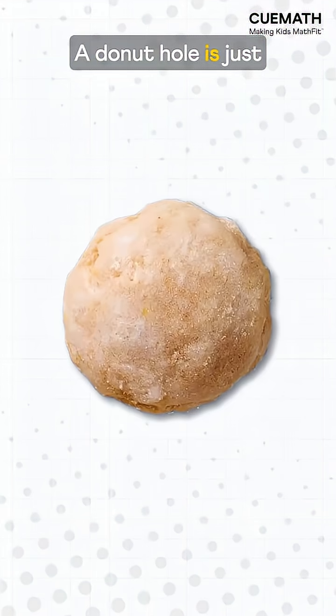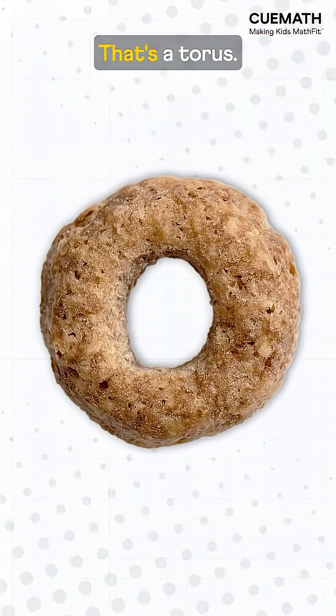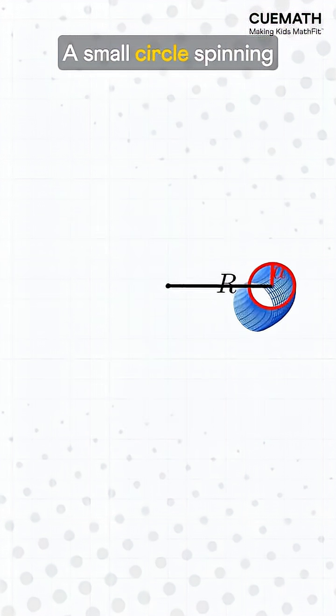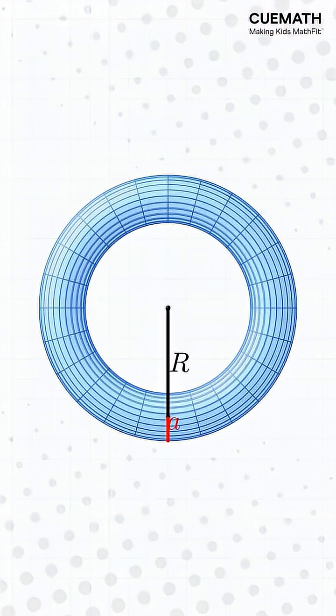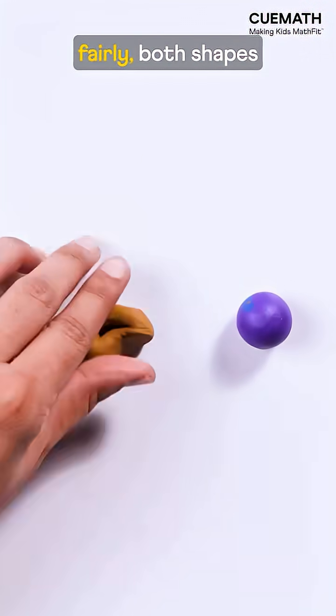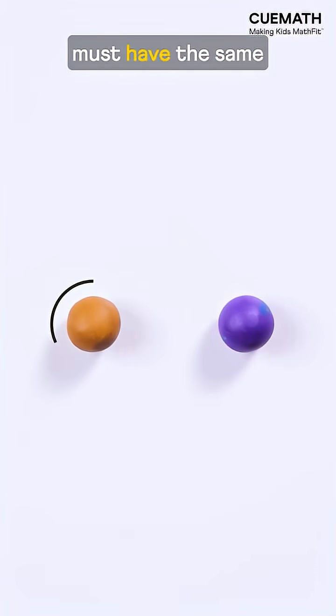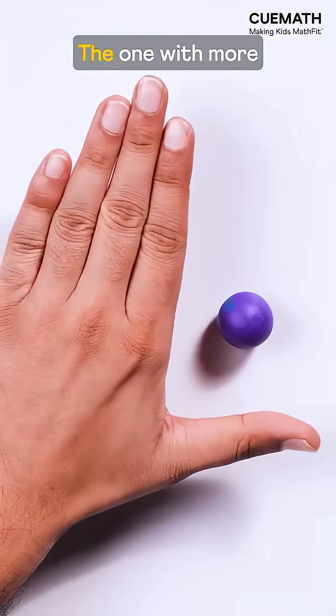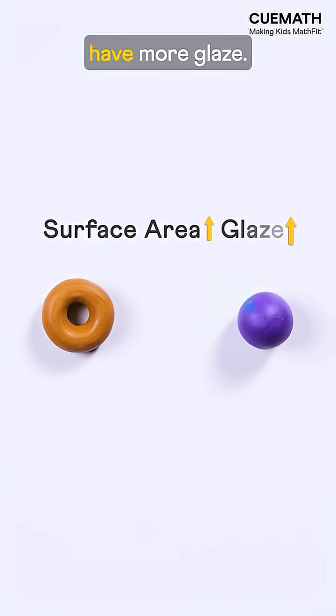A doughnut hole is just a sphere with a radius, and a doughnut is a torus—a small circle spinning around a bigger one. Now to compare glaze fairly, both shapes must have the same volume of dough. The one with more surface area will have more glaze.